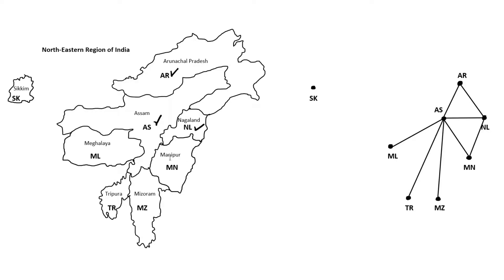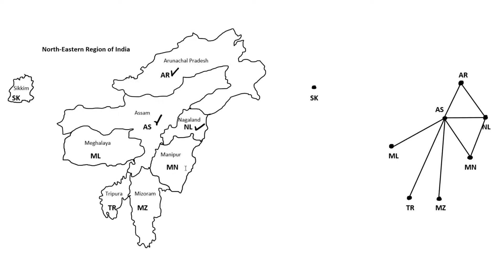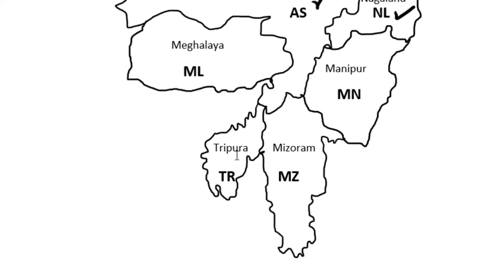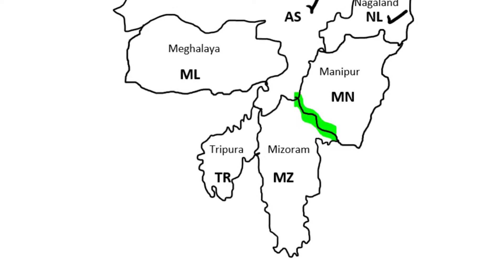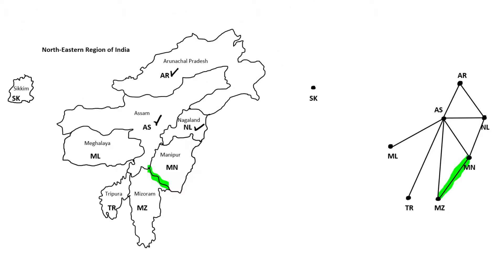Let's look at MN — again, only focusing on those states we haven't looked at yet. MN shares a common boundary with MZ, and everything else is touching states we've already looked at. So we just need to connect MN to MZ. Now we're done with MN.